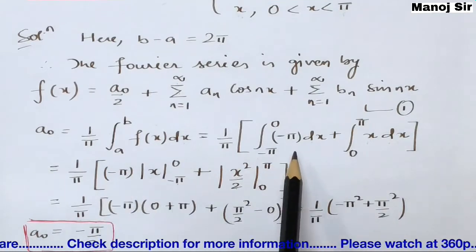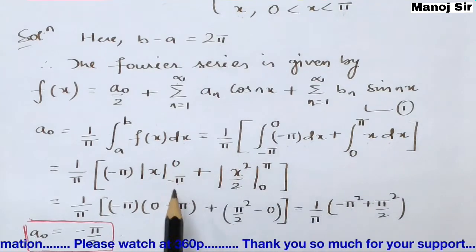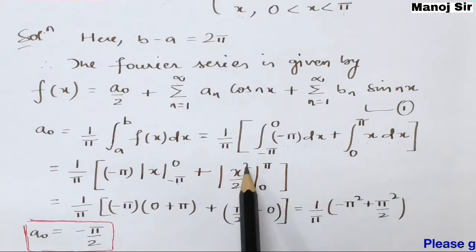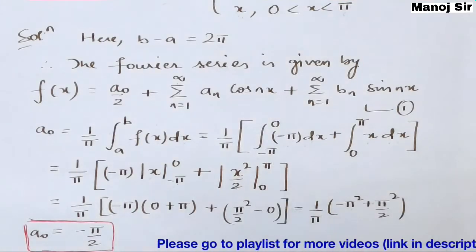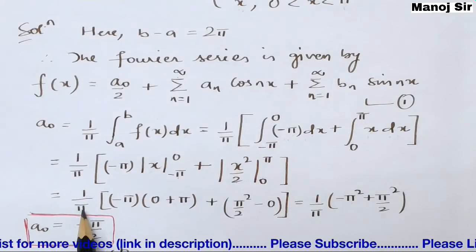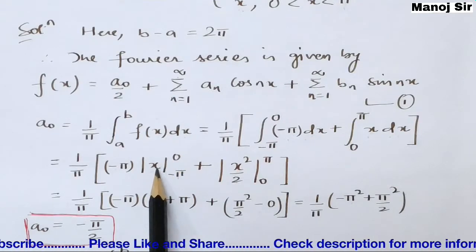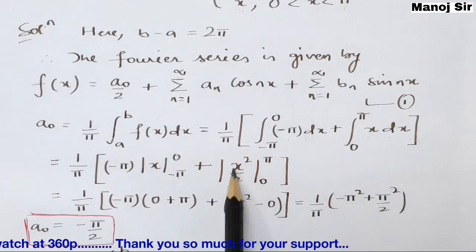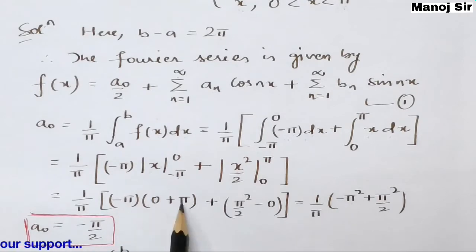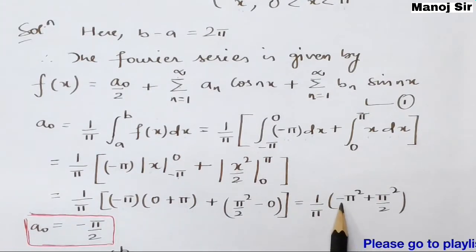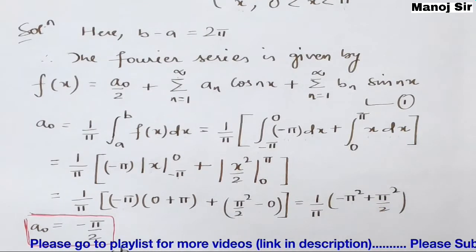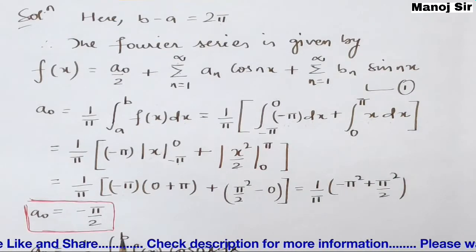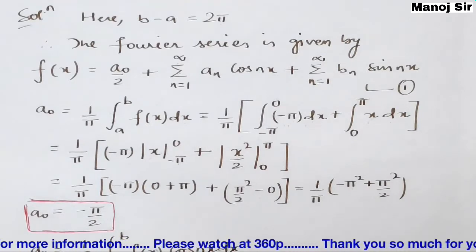Solving: (1/π) [-π · x |_{-π}^{0} + x²/2 |_{0}^{π}] = (1/π) [-π(0 - (-π)) + (π²/2 - 0)] = (1/π) [-π² + π²/2] = (1/π)(-π²/2) = -π/2. So a₀ = -π/2.